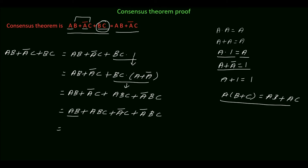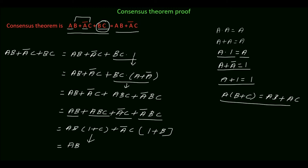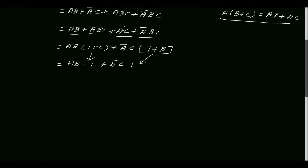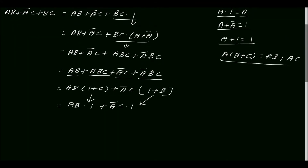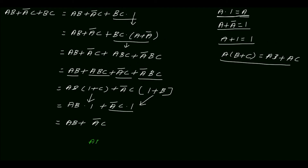In the first two terms the common variable is AB, so we factor it out: AB(1 + C). In the third and fourth terms the common variable is A'C, so we factor it out: A'C(1 + B). Applying the theorem 1 + x = 1, we get AB·1 + A'C·1. Since A·1 = A, this simplifies to AB + A'C. Therefore AB + A'C + BC = AB + A'C.